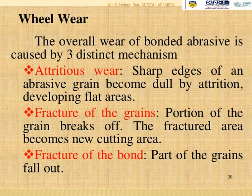Wheel wear in bonded abrasives is caused by three distinct mechanisms: attritious wear — where sharp edges of abrasive grains become dull by attrition, developing flat areas; fracture of the grain — where a portion of the grain breaks off and the fractured area becomes a new cutting edge; and fracture of the bond — where part of the grains fall out entirely.